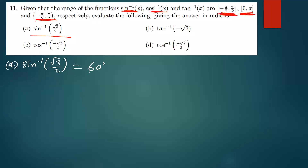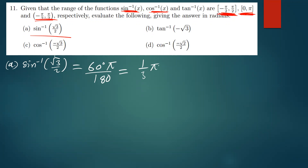In radians, we can convert this by multiplying it with pi and dividing by 180, and this is simply just π/3 in radians. Now if this is the answer, we have to check if it's in the given range.